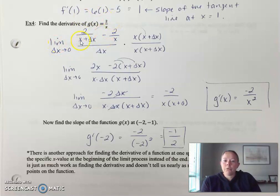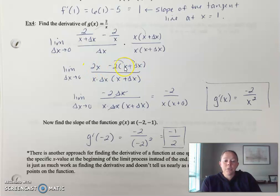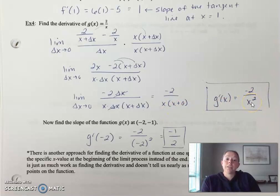Use your formula: plug in (x + Δx) and then the original function. Whenever you have a fraction within a fraction, clear them out — get the common denominator, multiply in the numerator and denominator. Don't distribute in the denominator. After you've cleared the fractions, distribute the −2. The 2x and −2x cancel, and then your Δx's cancel. At that step you can plug 0 in for Δx, leaving −2 in the numerator and x·x in the denominator.